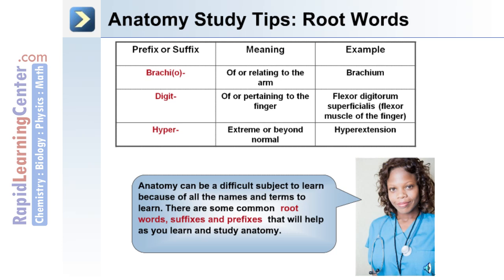For example, brachio — the meaning of brachio is of or relating to the arm, and an example would be brachium. Digit means of or pertaining to the finger, and an example would be the flexor digitorum superficialis, which is the flexor muscle of the finger.